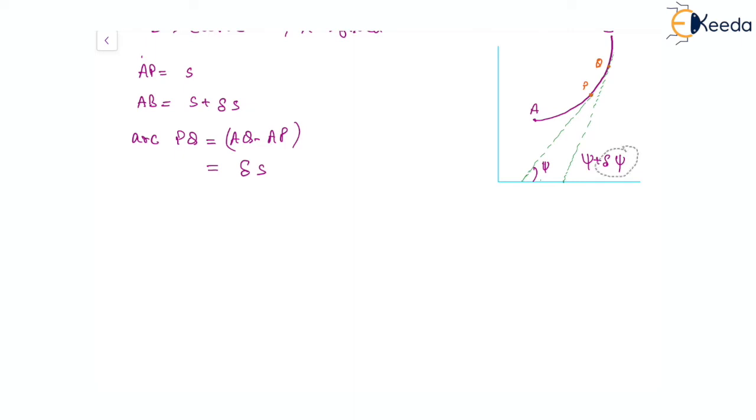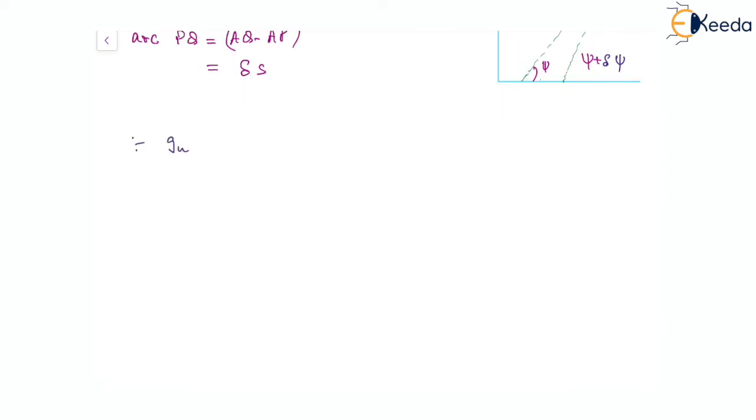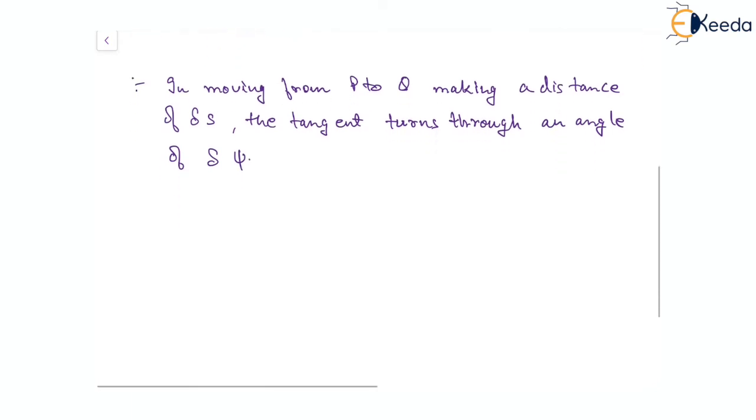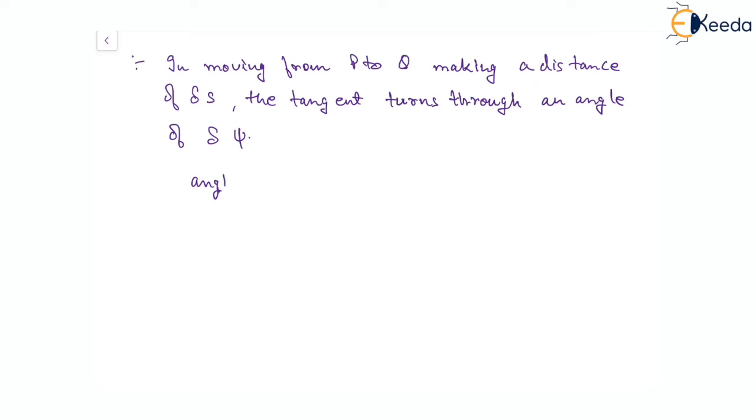From P to Q, making a distance of del s, the tangent turns through an angle of del psi. This del psi is the total bending of the curve, that is arc PC. This is the total bending or total curvature.